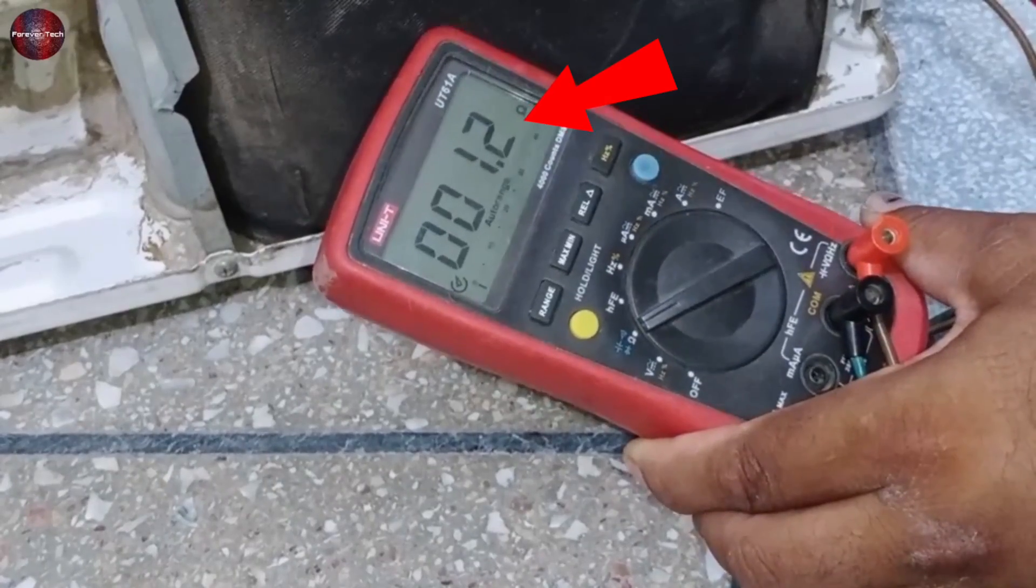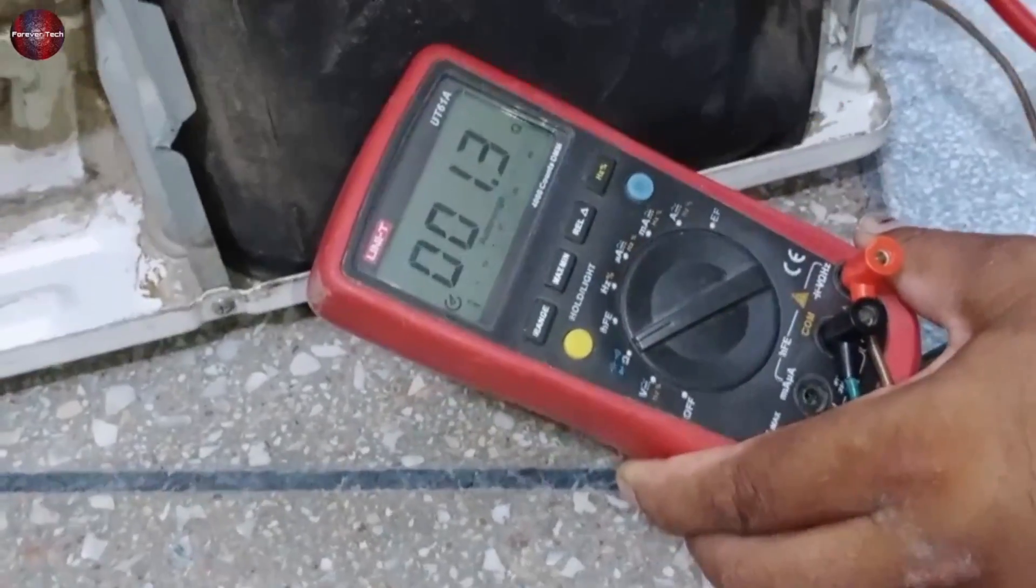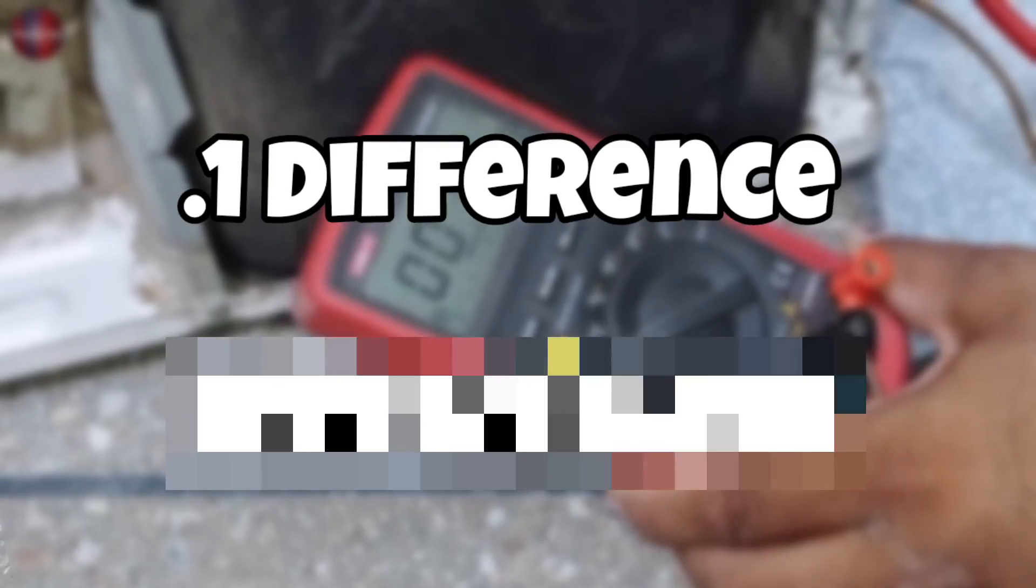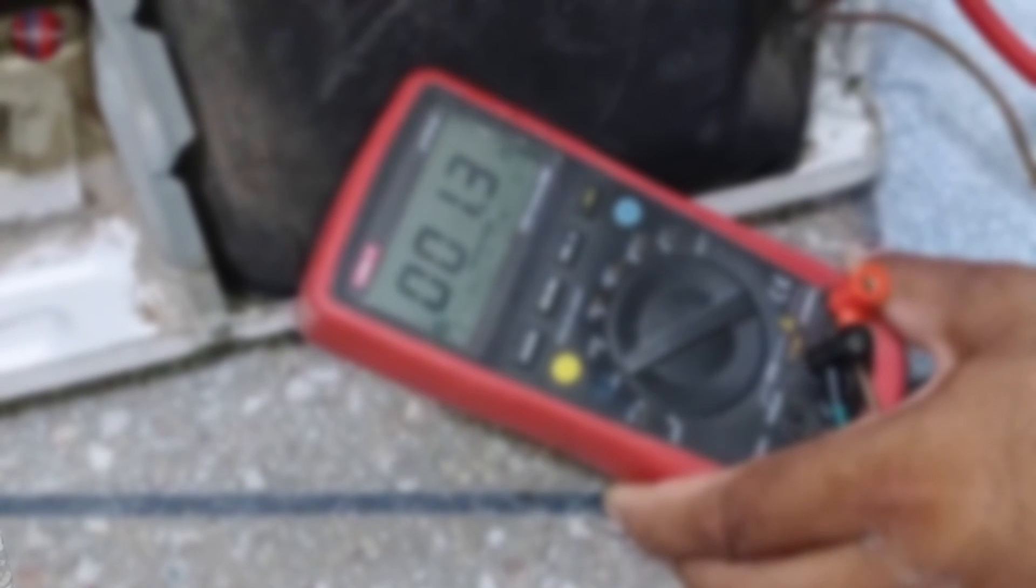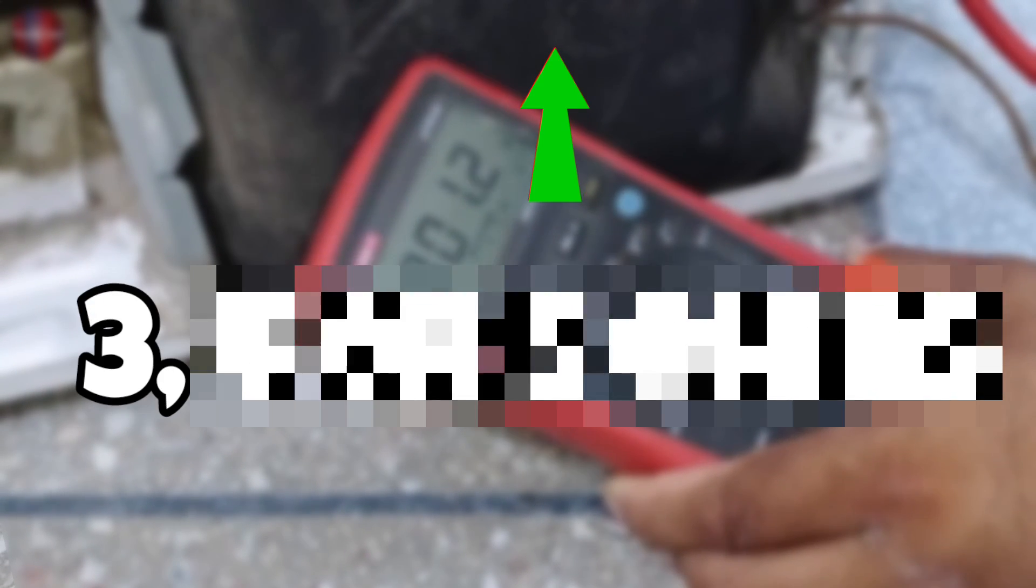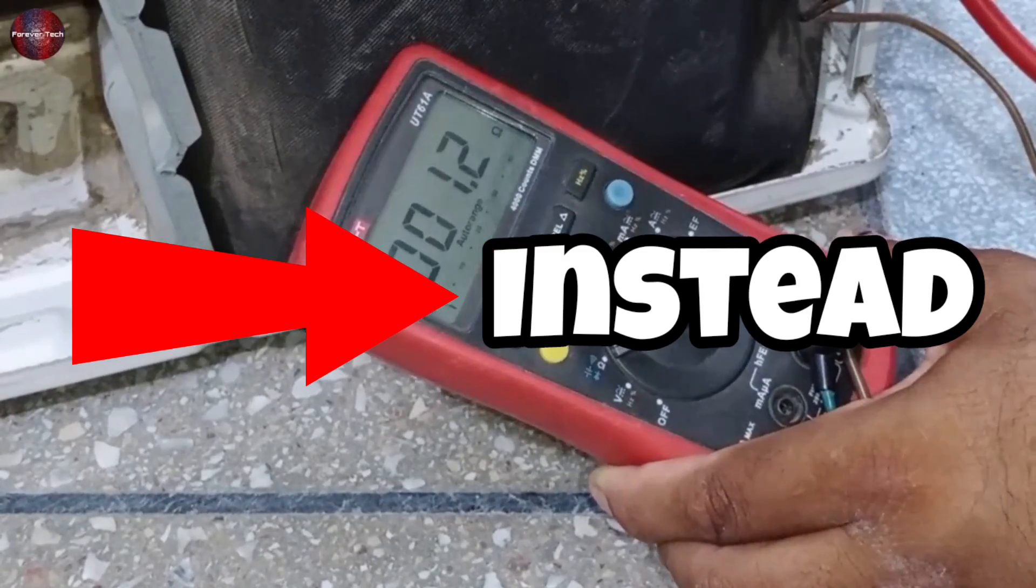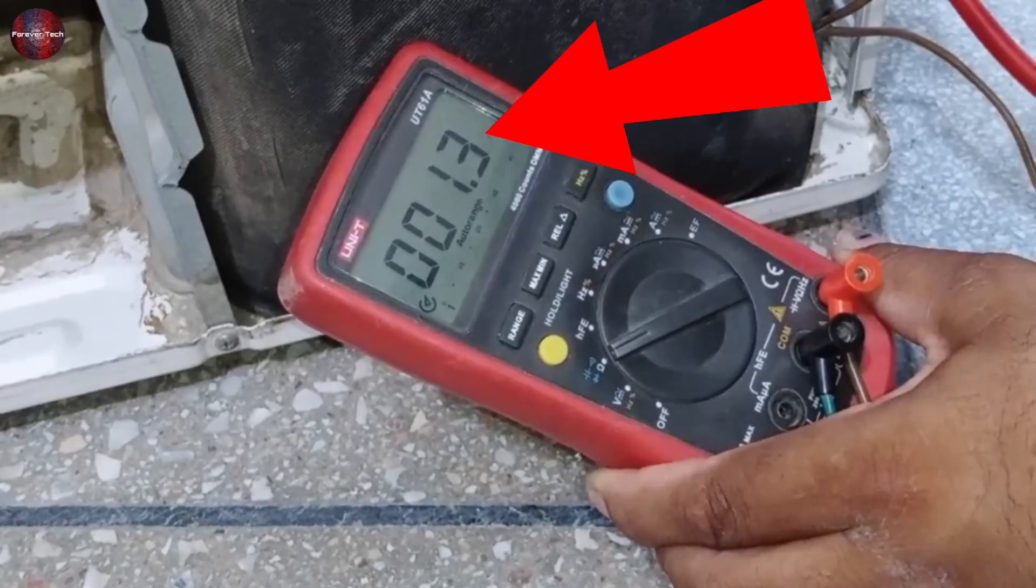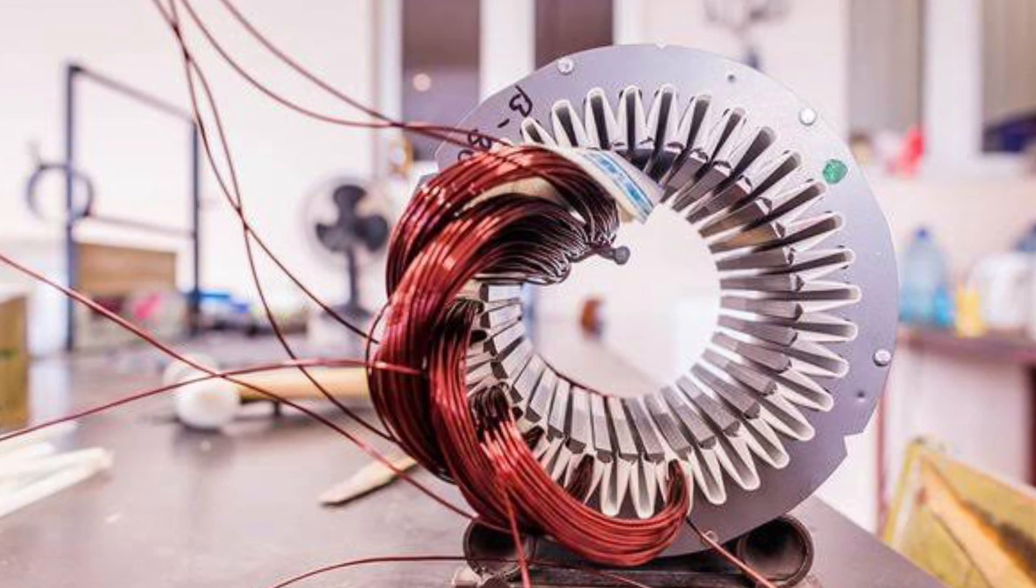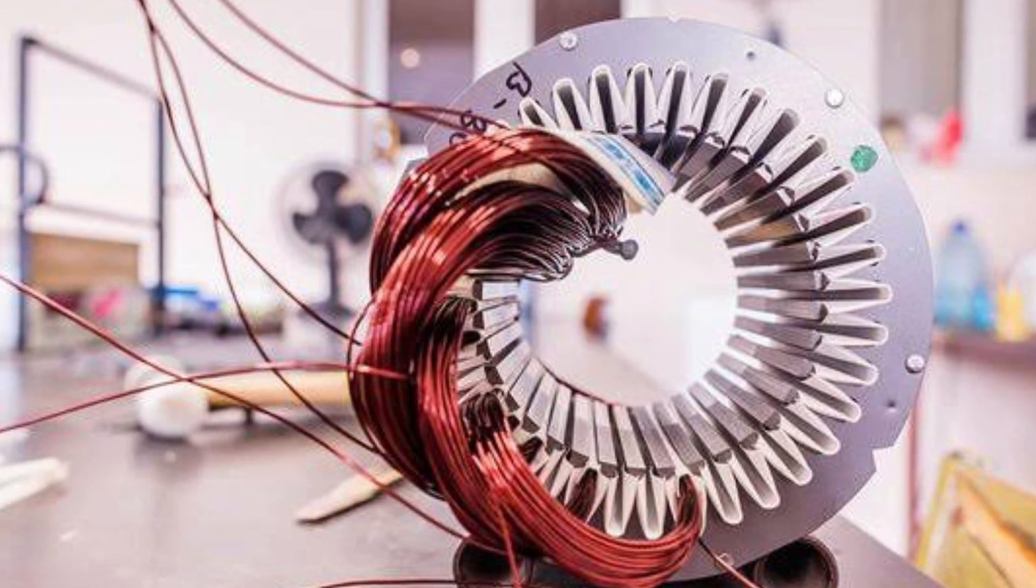All the values of the compressor terminal should be the same. If the reading difference is in points, no problem. The reading should not rise to 3, 4, or 5 ohms. Instead, it should be near the value of 1.2 ohms. Now it means that the value is correct for the compressor and the compressor winding is electrically in good condition.